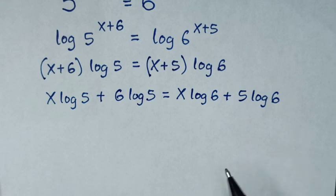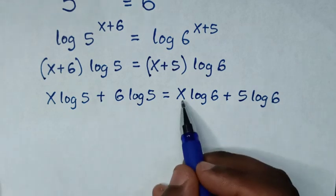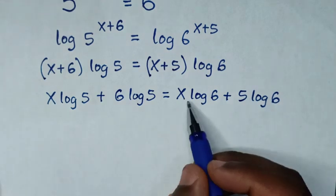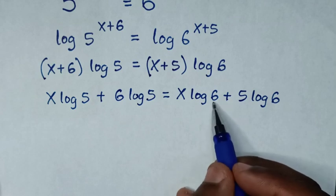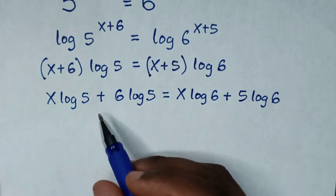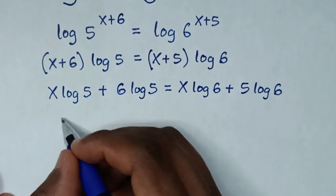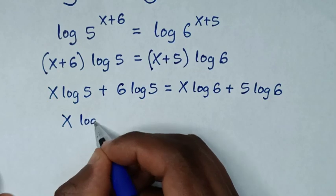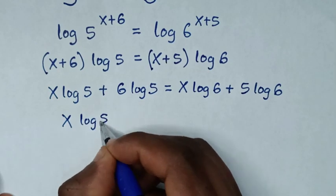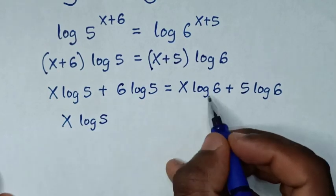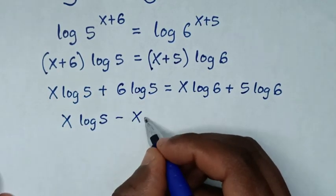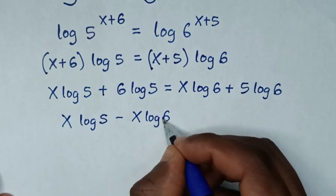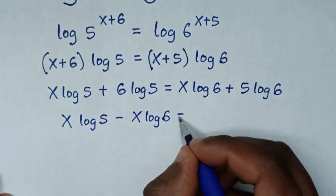Then we'll place the terms with variables of x on one side, so this x log of 6 will move to the left side, so it will be x log of 5 minus x log of 6, then is equal to...